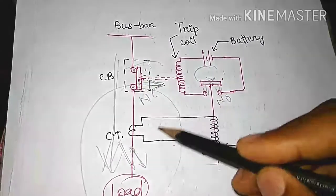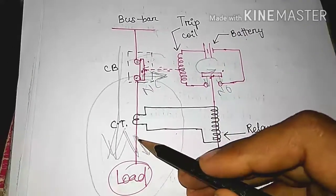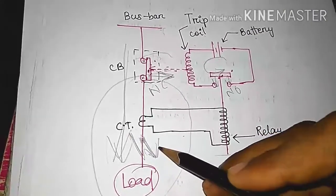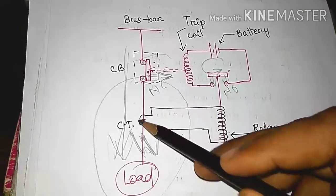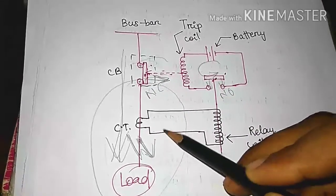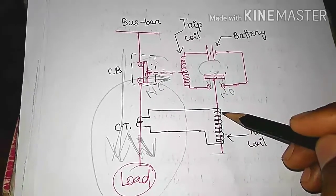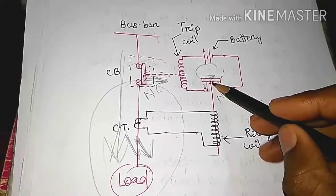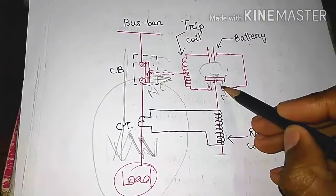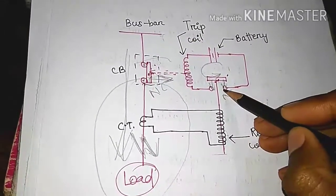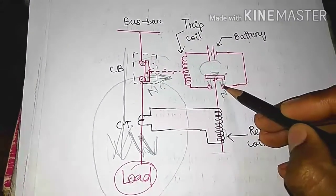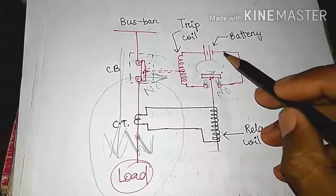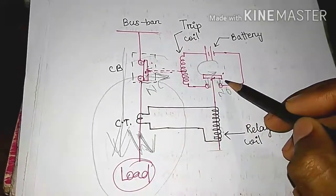But when fault occur in this section, in this point, then maximum current will flowing through the CT or current transformer. In that time, the relay coil will be energized and this moving contact will be magnetized and it will be pulled downward direction. And the moving contact and fixed contact will be bridged or closed to each other. Then this circuit will be completed.